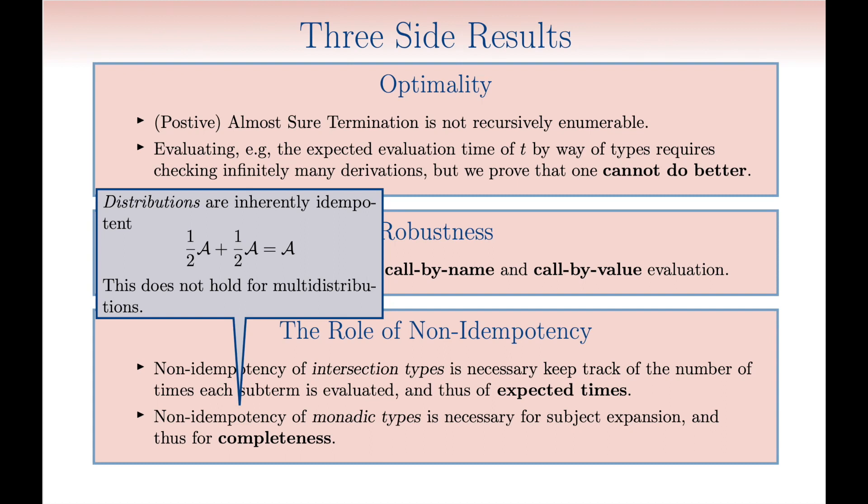About the role of non-idempotency, one should mention that if one replaces multidistributions with distributions in side types, subject expansion would fail. This shows that non-idempotency is not only necessary to reflect the expected evaluation time of terms, but also essential for preciseness.